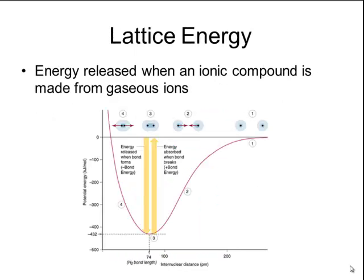When those ions combine together to form the crystal lattice, there's a certain amount of energy that is released. This energy is called the lattice energy. The formal definition of lattice energy is the energy that is released when an ionic compound is made from its gaseous ions. Just like with molecular compounds, ions have a certain amount of potential energy when they are separated by a certain distance. As you push those ions closer together, their amount of potential energy drops. The difference between the potential energy when they are separated and when they are bonded together in the crystal lattice is that energy released, called the lattice energy.